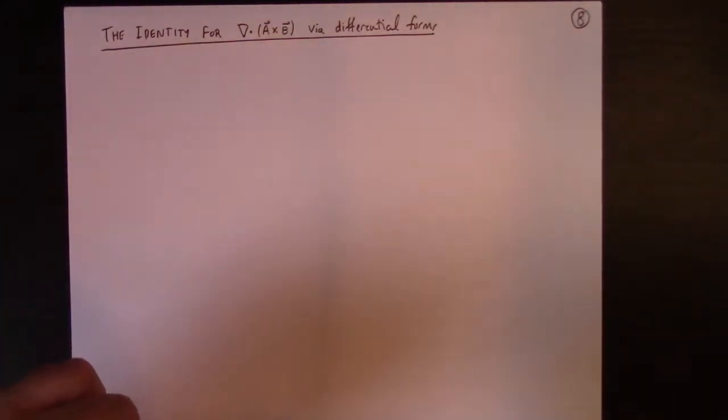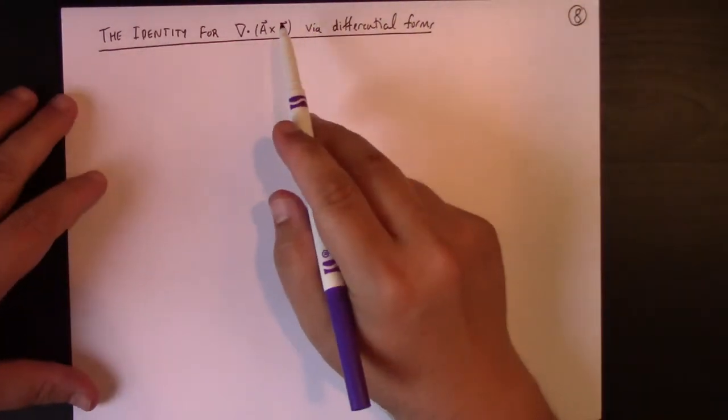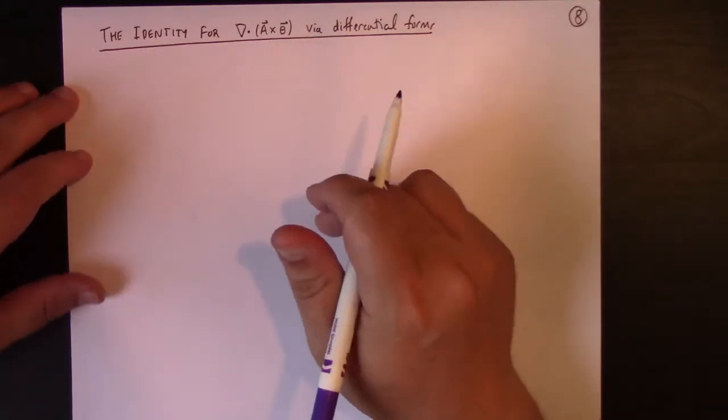All right, so I forgot one last thing in lecture three. I wanted to see how this divergence can be calculated using differential forms.